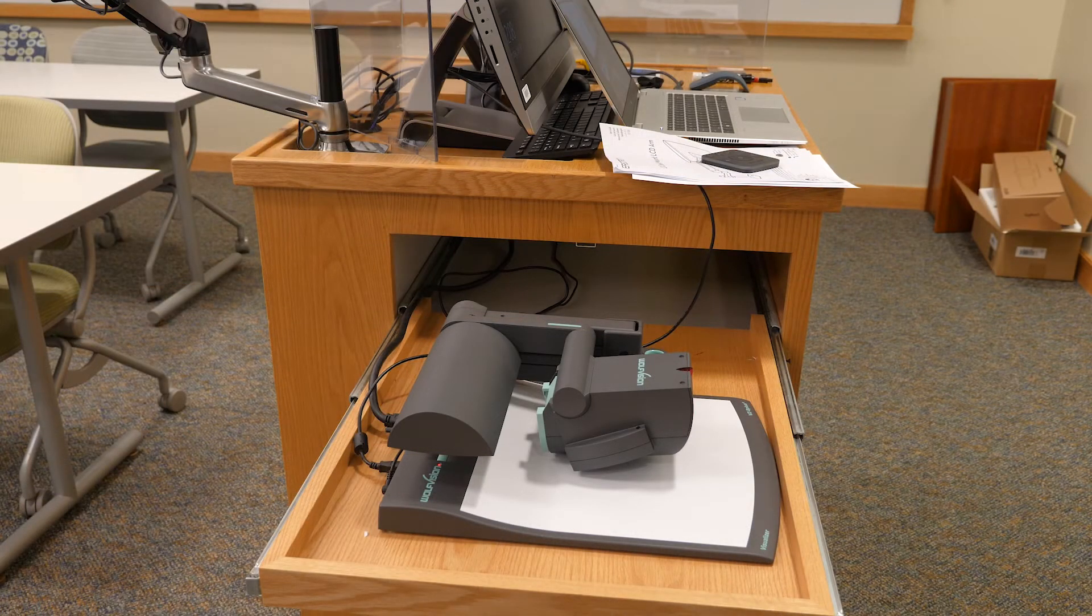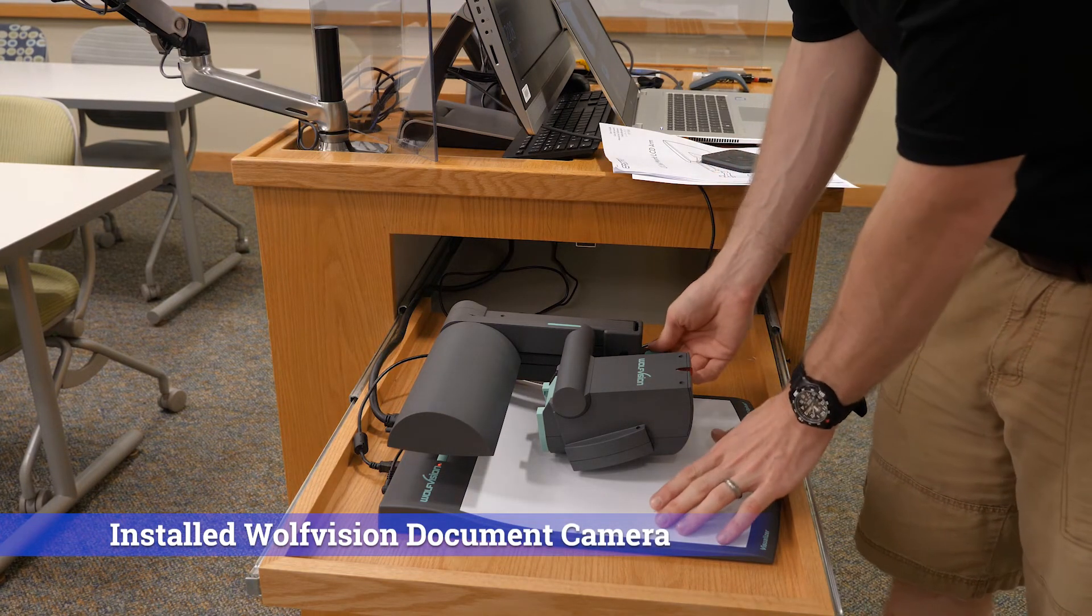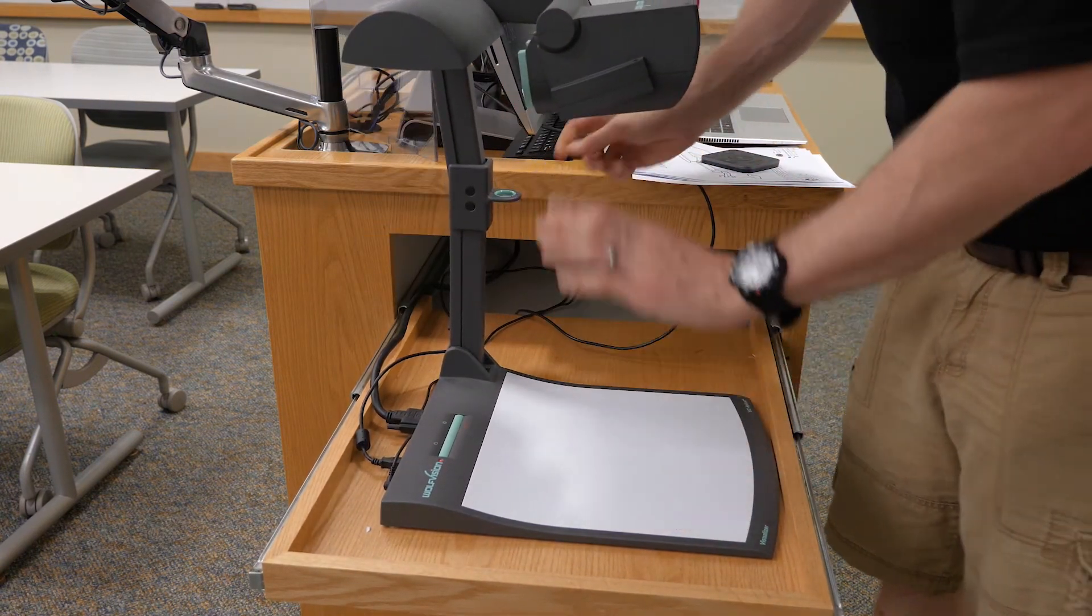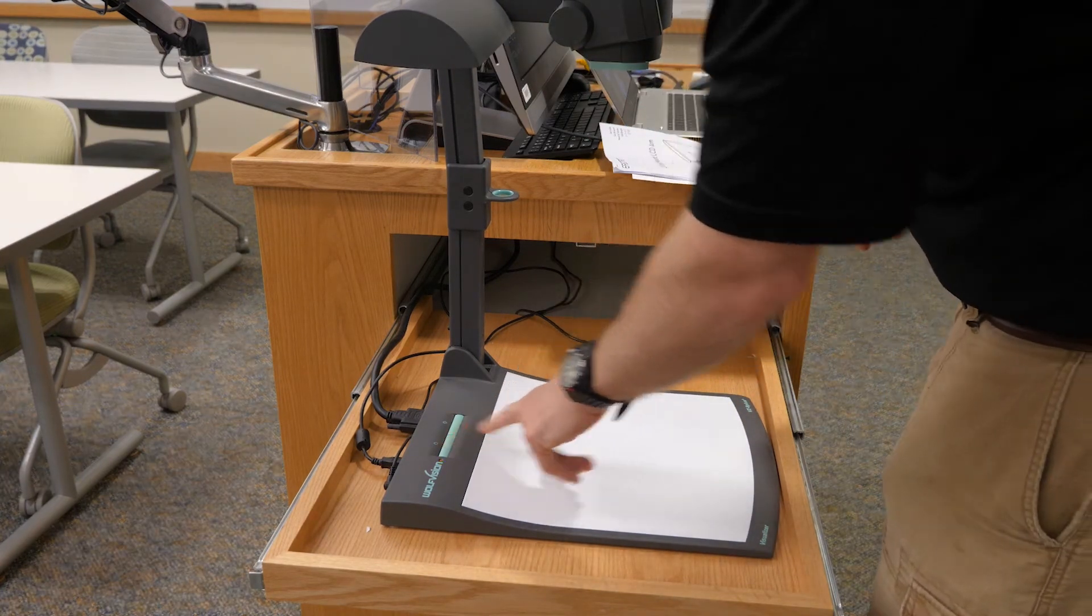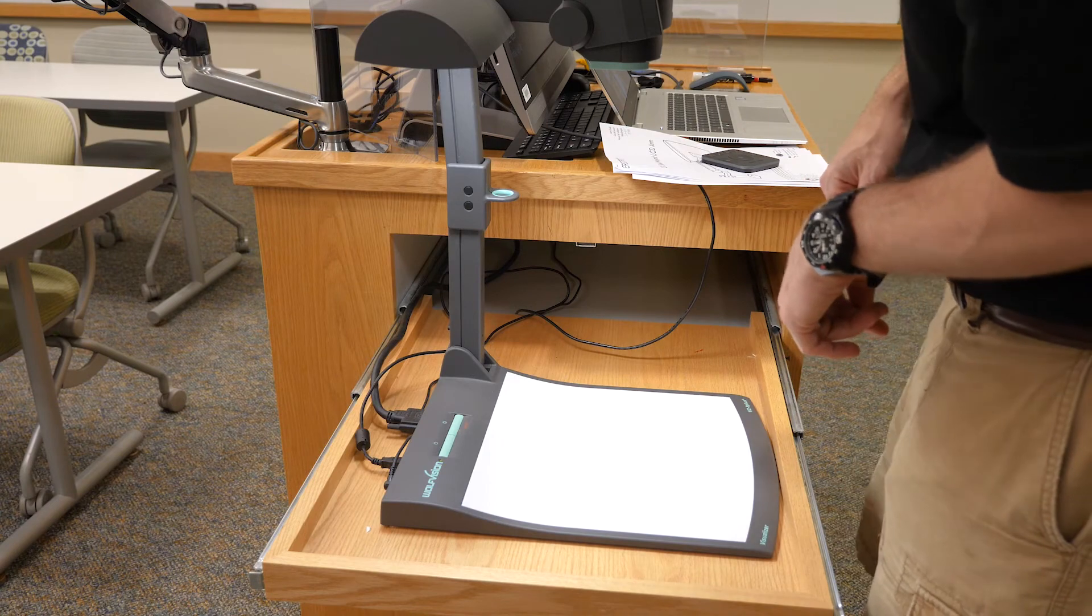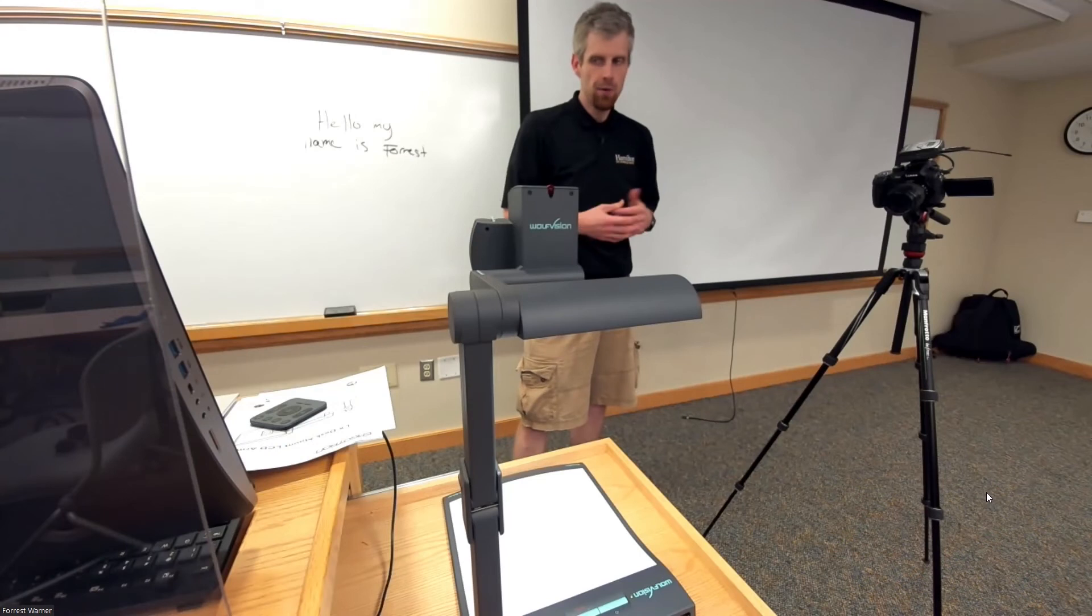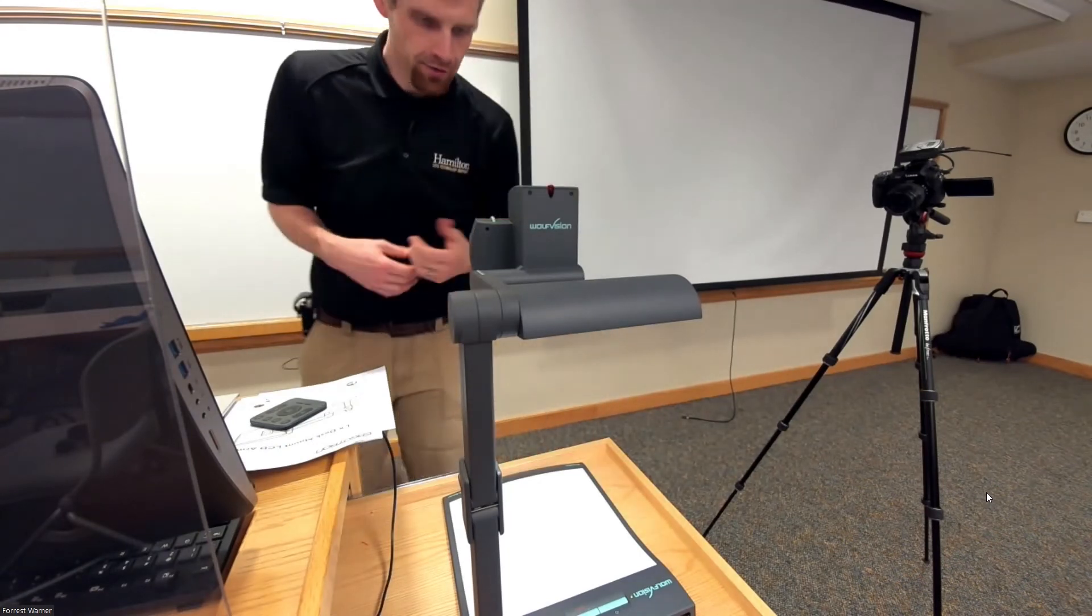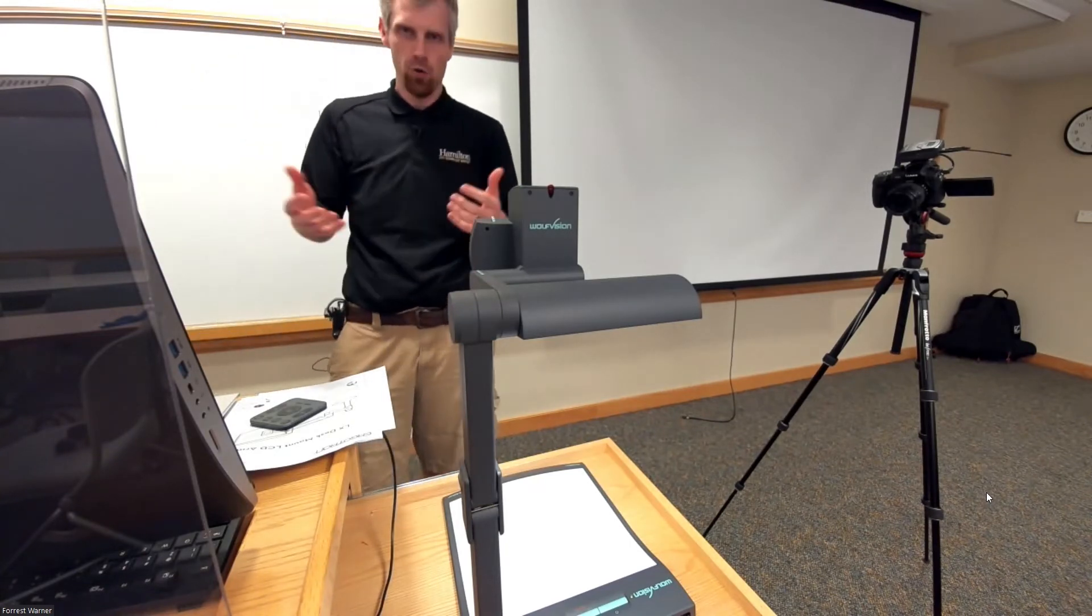Now I want to talk a little bit about the document cameras that are installed in the spaces. This is Wolf Vision document camera. They do allow for a digital connection to a computer via USB. You just open the document camera as normal. You want to make sure that you are turning it on. Once it's on, you will actually operate the camera very typical to what you would do normally. There's a zoom function. There's a focus function. There's a freeze function. It should still all operate as normal.